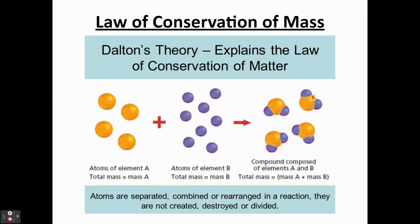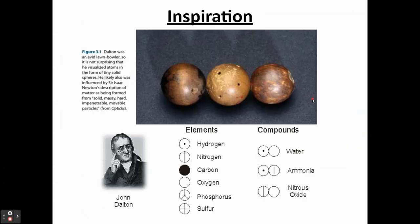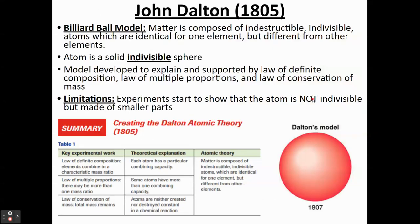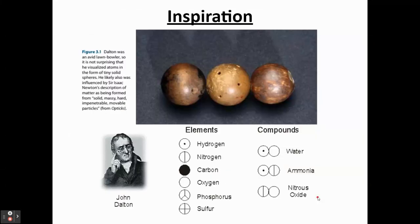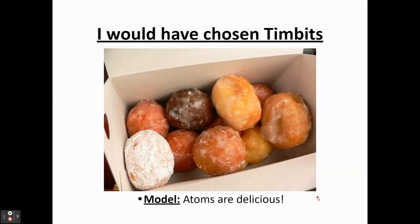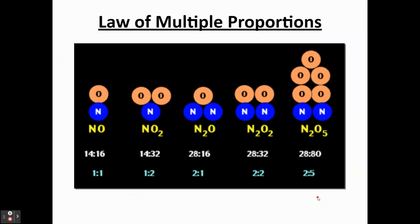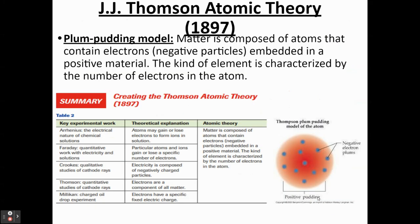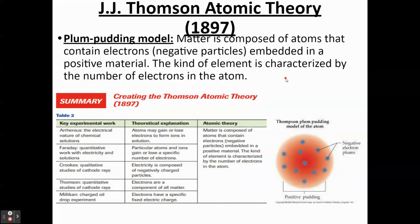Dalton's model was pretty powerful because it could explain the main laws of chemistry. But the main problem is that Dalton's model is not really accurate and didn't hold up to future experiments, which showed that the atom is actually made up of smaller parts after all. Let's take a look at one of those future experiments that broke down Dalton's model of the atom.